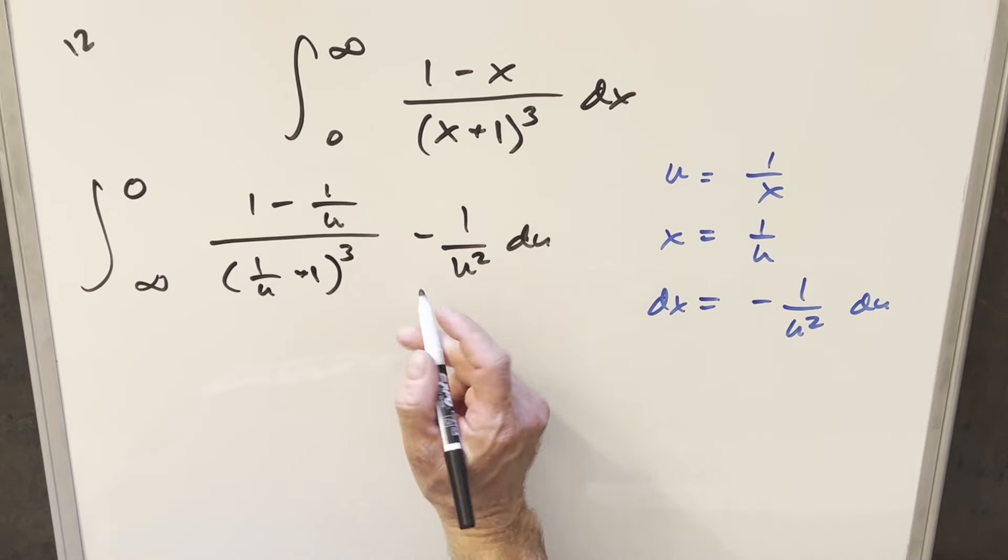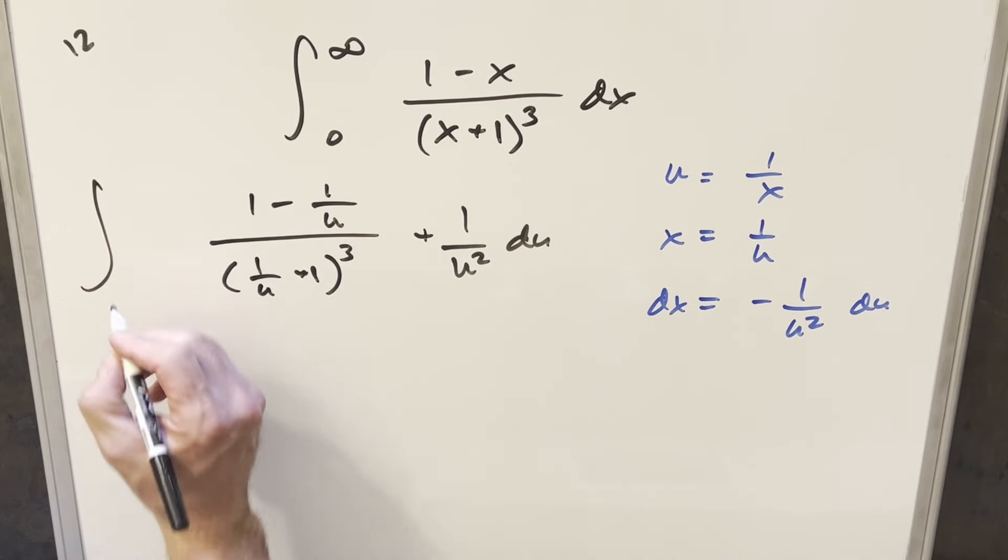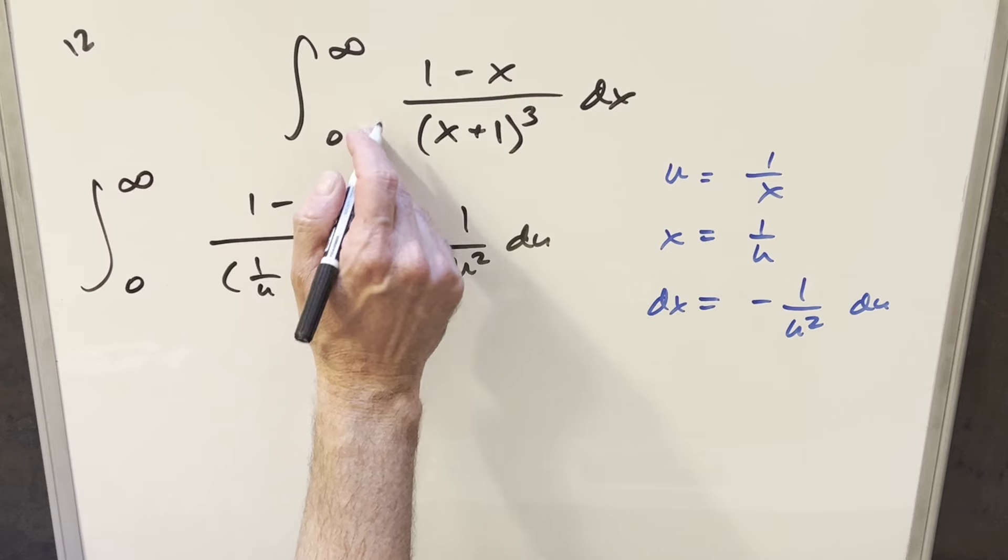But what I want to do with this minus sign is take it, bring it out front, and use it to flip the bounds around. So changing the bounds, now we have this going from 0 to infinity, just like we had it back here.